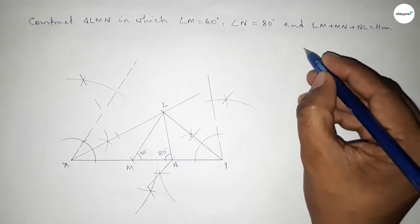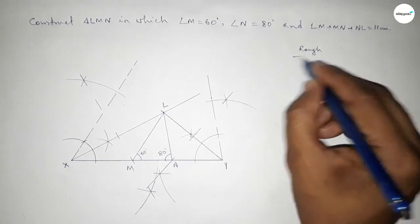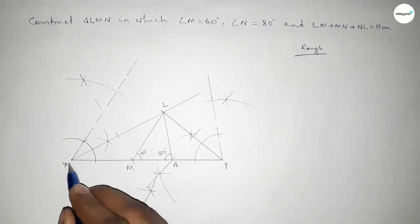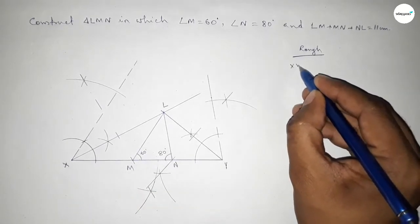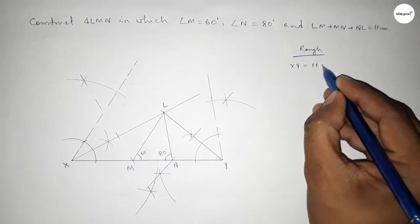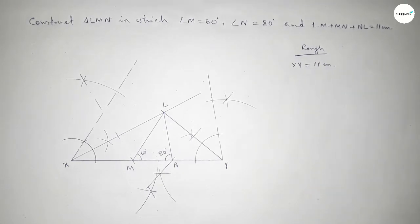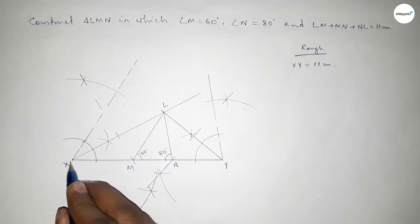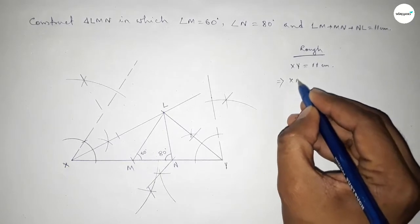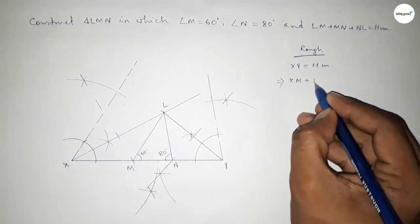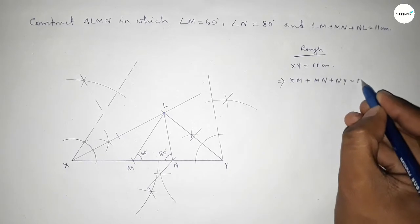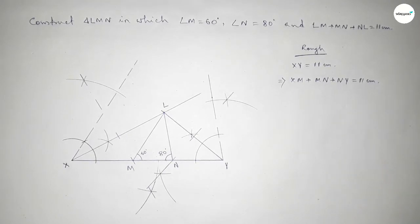Now for the mathematical verification: given XY equals 11 centimeters. We can write XY as XM plus MN plus NY, so XM plus MN plus NY equals 11 centimeters.